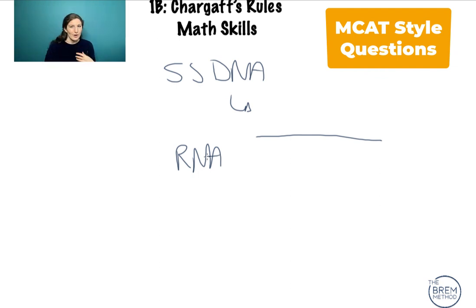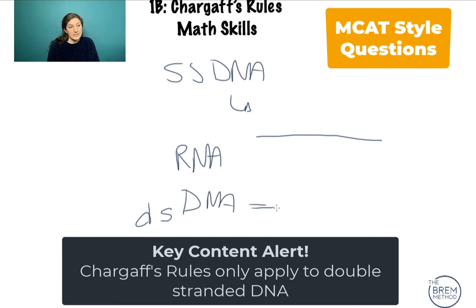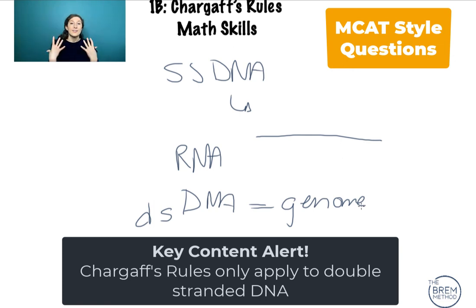Chargaff's rule only applies to the hydrogen-bonded double-stranded DNA. One way they could ask this is: can you determine the nucleotide composition of this single-stranded DNA? The answer would be no. Chargaff's rules apply when they mention things like 'the organism's genome' or 'chromatin' — anything indicating in vivo double-stranded DNA acting normally in the system. Thanks for joining me, and check out the rest of this series for more math practice for the Bio/Biochem section of the MCAT.